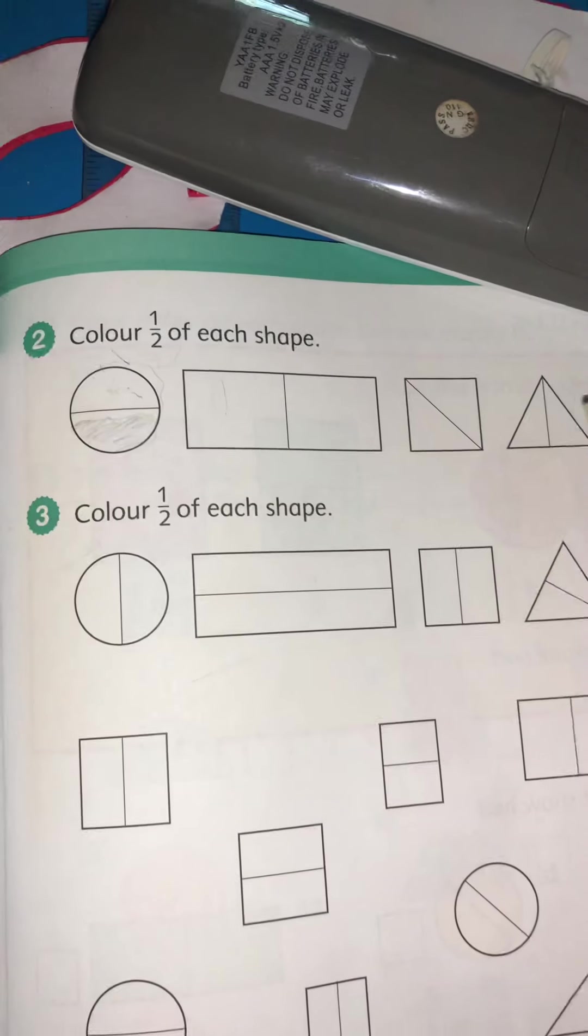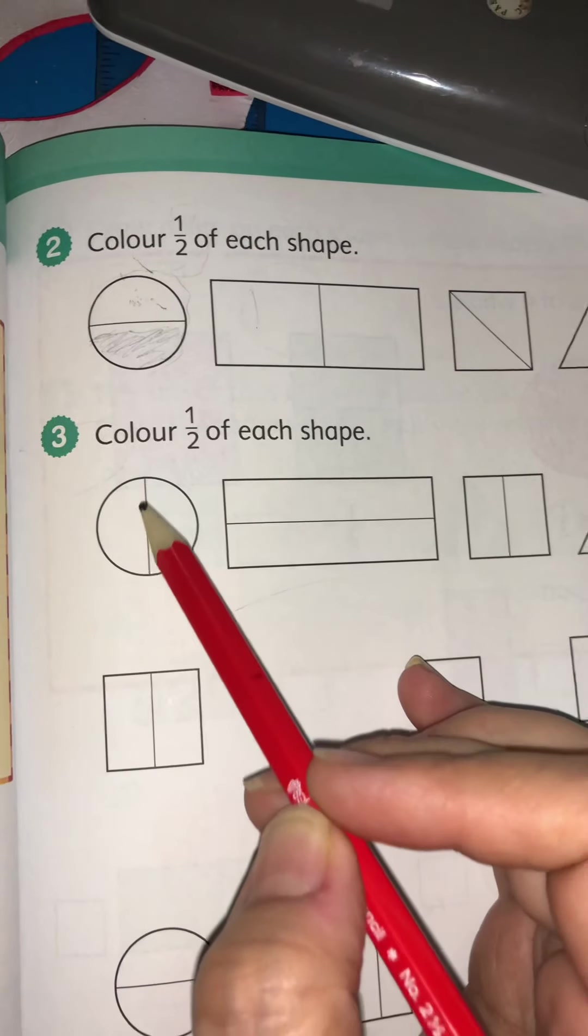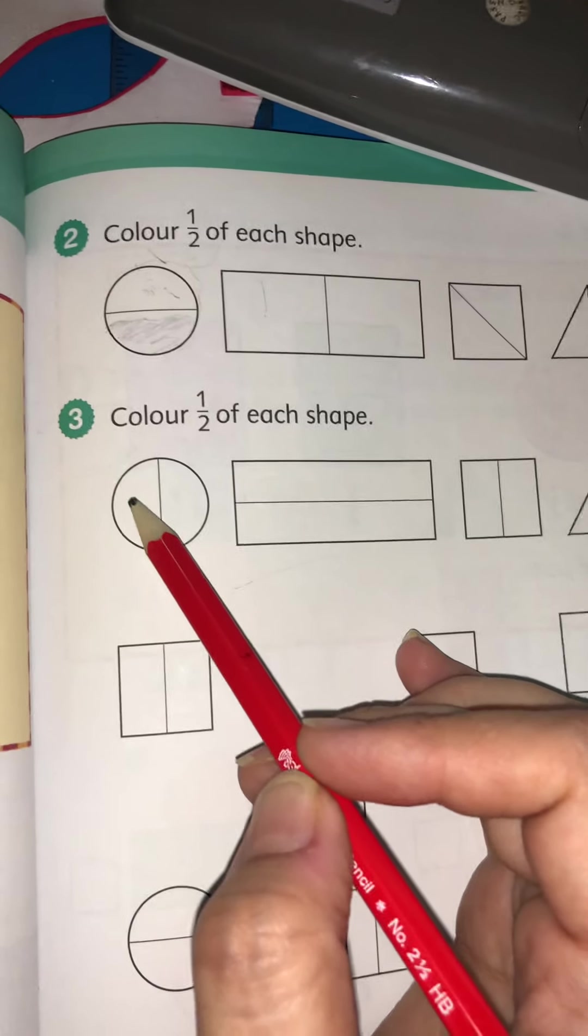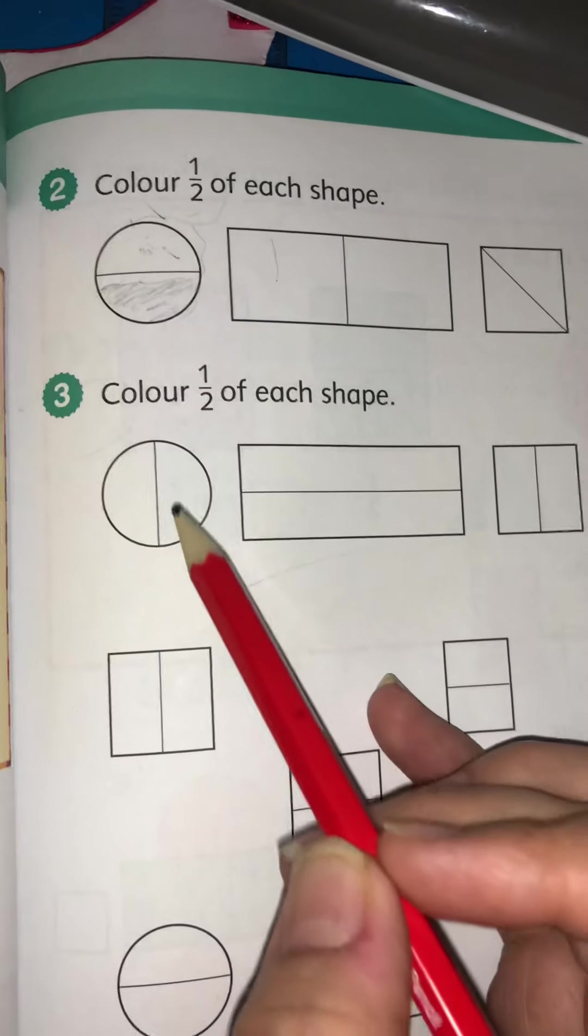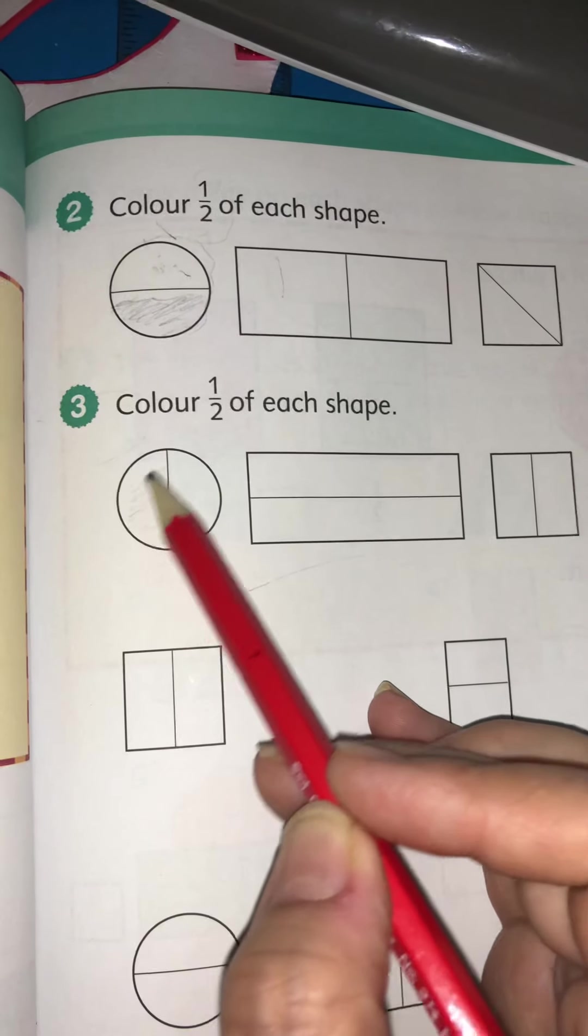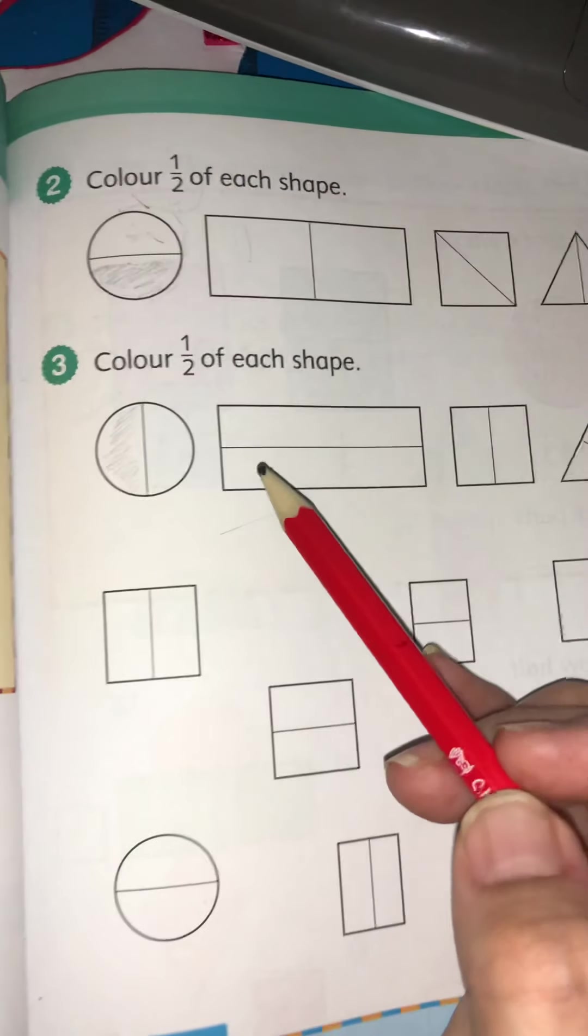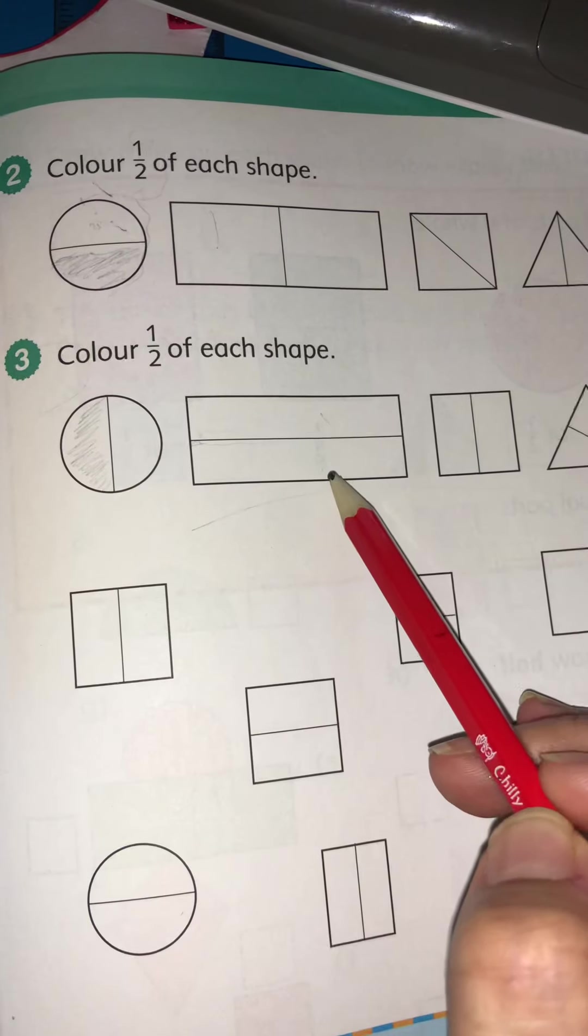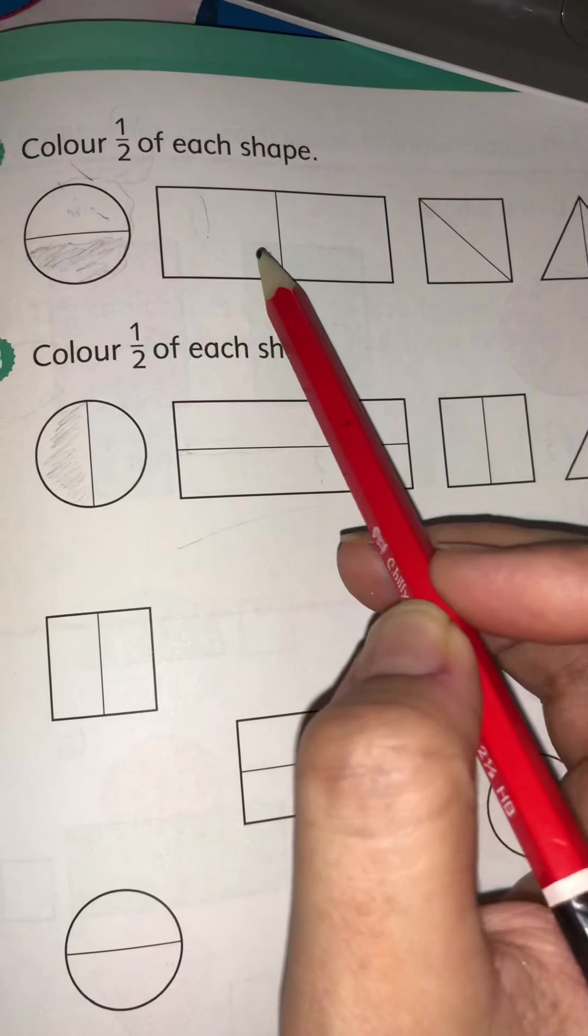And same you have to do with the other shapes. Question number 3: Color half of each shape. Now they have given us another way of halving the picture. So we can half a circle like this, we can half a circle like this again. So we have to color only half of each. Now I will notice that they have divided this picture like this, horizontally. It's not vertically here, it's been done half vertically. We can do half both ways.